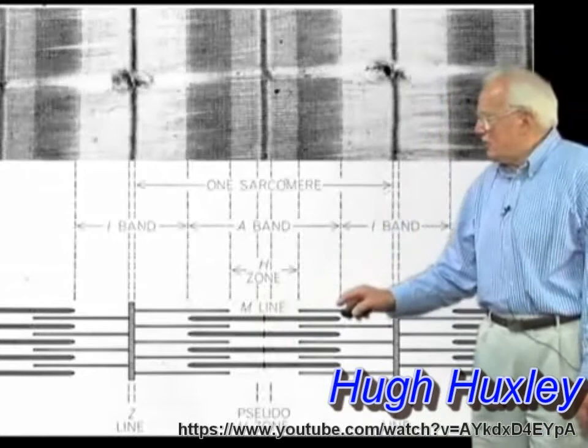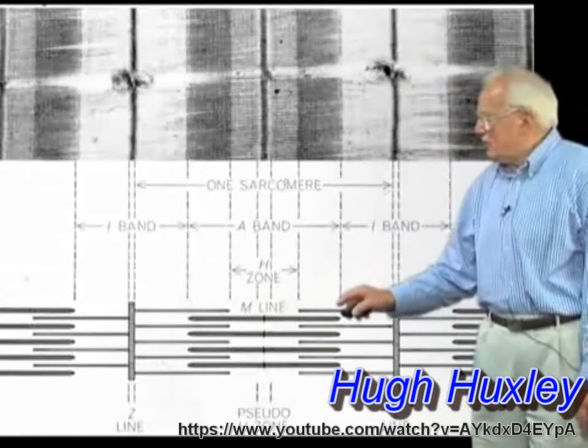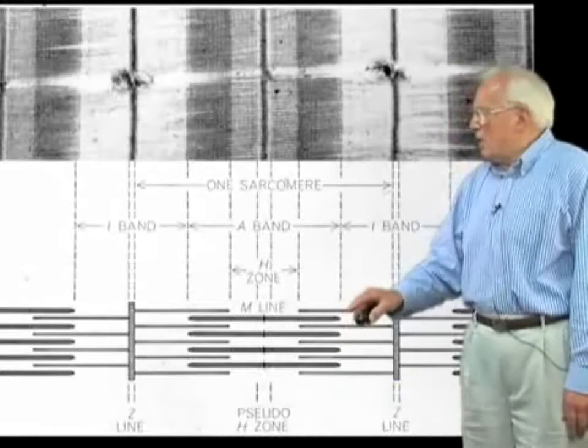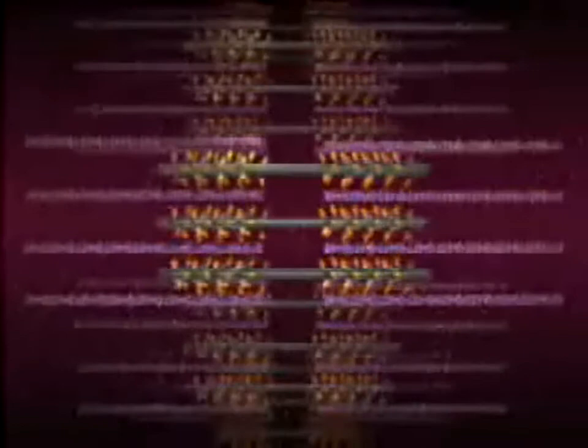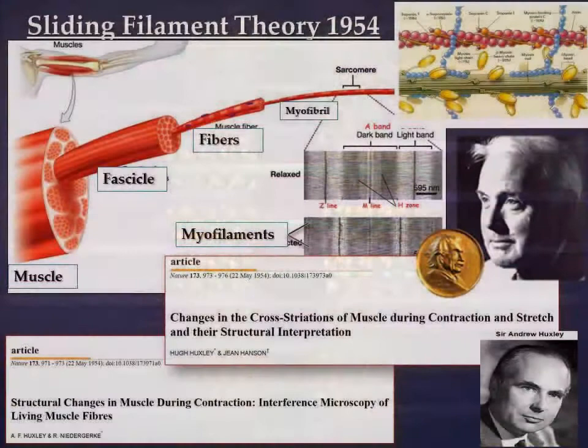Hugh Huxley saw thick and thin protein filaments overlapping each other, but he wasn't the only one. Another researcher named Andrew Fielding Huxley saw the very same thing, but he had to develop a whole new type of interference-based microscope in order to make his observations. So using two different instruments, two different teams observed the same cross-bridging and overlapping protein filaments. These findings were published in the same journal on the same day, and it became known as the sliding filament theory of muscle contraction.